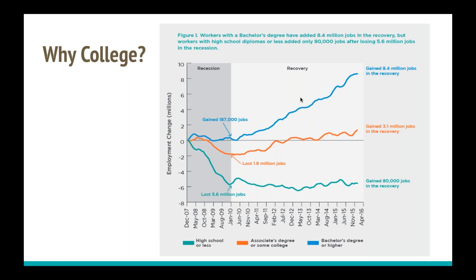The orange line shows jobs requiring an associate's degree or some college. There was a dip of about 1.8 million jobs during the recession, but pretty much full recovery since, with 3.1 million jobs regained for net job growth. The green line at the bottom shows jobs requiring a high school diploma or less — 5.6 million jobs were lost during the recession with essentially no recovery, only about 80,000 jobs gained, so all 5.6 million of those jobs never came back.